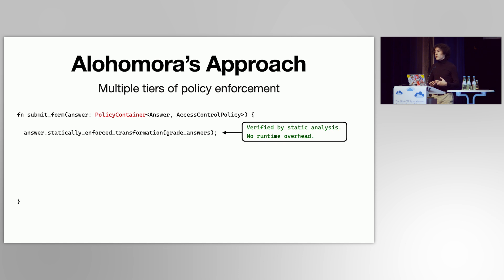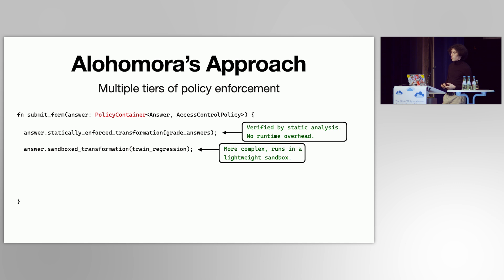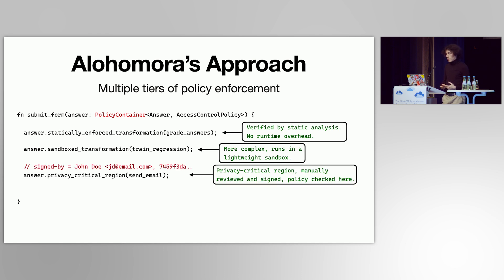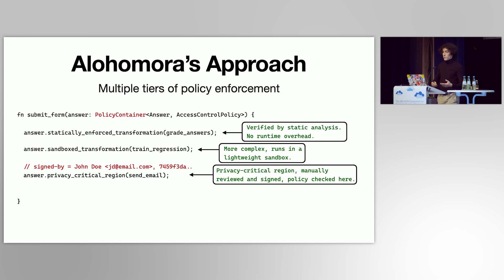For something more complex, like training a linear regression model on the data, static analysis most probably cannot verify safety, so Alohomora can run it in a sandbox, which also prevents the operation from leaking data but incurs some runtime cost. If the operation actually sends data to an outside sink not annotated with Alohomora, Alohomora provides developers with privacy-critical regions, where another developer or reviewer can review the operation manually and attach their GitHub signature to the code.